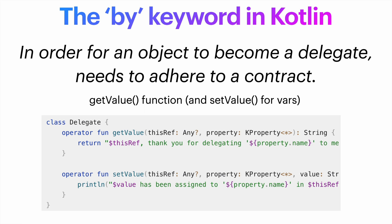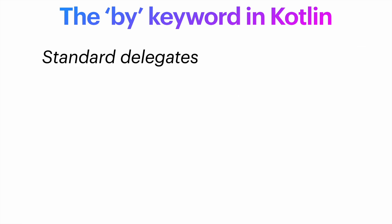You can do that, but in general most of the time you will not create one — you will use one of the standard Android delegates. For example, you may use BY lazy. This basically creates the property only once you first read it, and after that it returns the same value for the rest of the variable's life cycle.